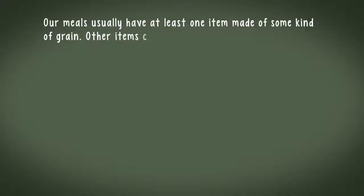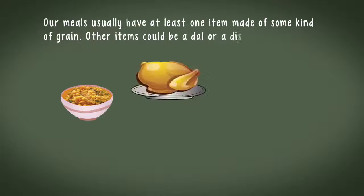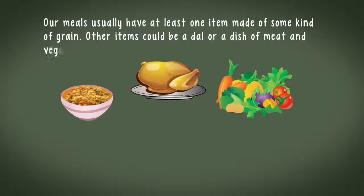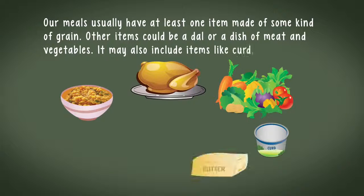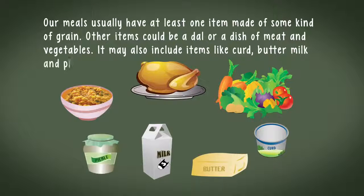Our meals usually have at least one item made of some kind of grains. Other items could be a dal or a dish of meat and vegetables. It may also include items like curd, butter, milk and pickles.